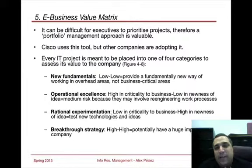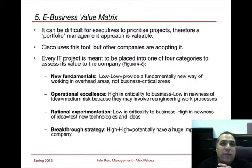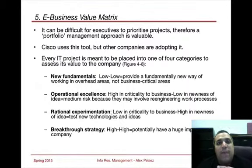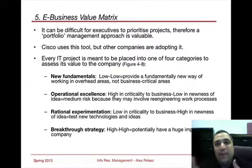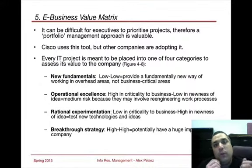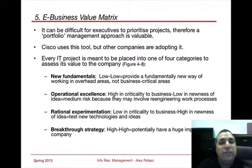One of the ways you can reference this is a planning analysis called MoSCoW Analysis — spelled M-O-S-C-O-W but standing for M-S-C-W: must-haves, should-haves, could-haves, and wants. This is very much what that matrix is. What must we have in place to stay competitive? What should we have? What could we have? And what would be nice to have? You'll see a lot of executives use that type of method as well.